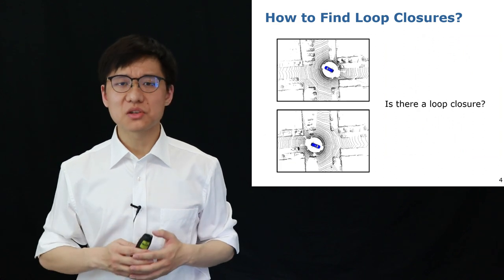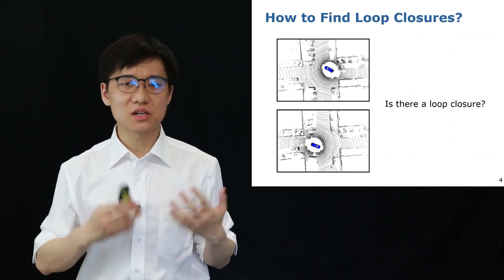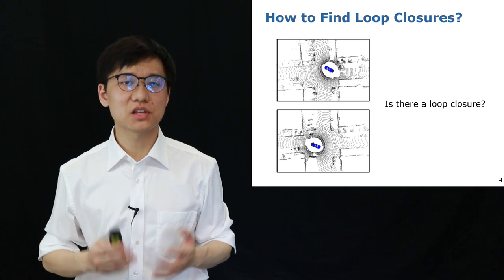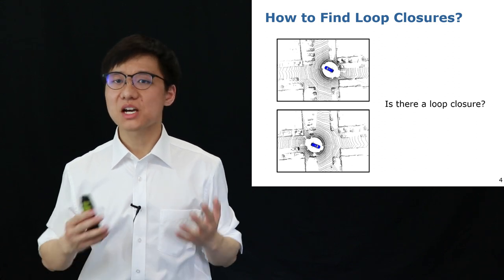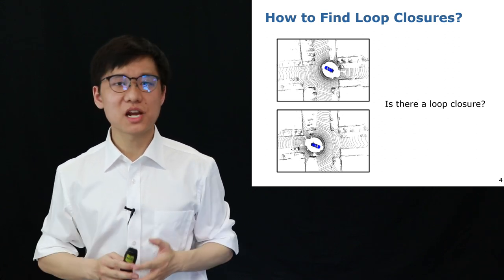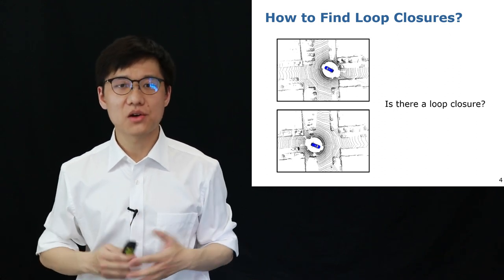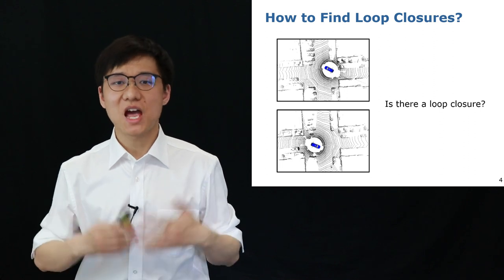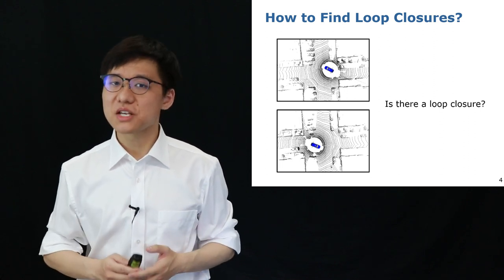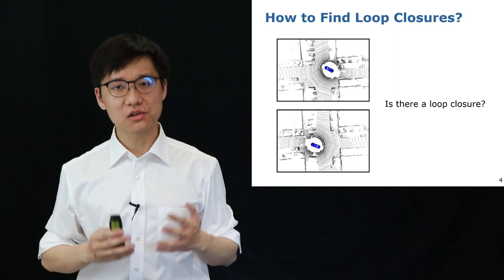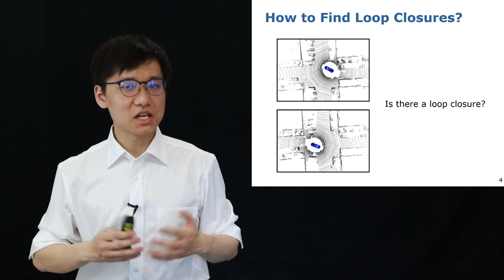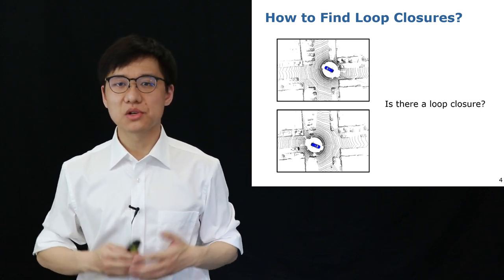Loop closing means identifying that the robot is at a previously same place in the context of SLAM. Our OverlapNet uses a deep neural network and provides the overlap and relative yaw angle estimates between pairs of LiDAR scans in an end-to-end fashion. Based on such estimates we tackle the loop closing problem by integrating our OverlapNet into a SLAM system.